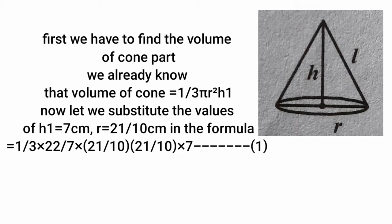First, we have to find the volume of the cone part. We know that volume of cone equals 1/3 π r² h1. Now let us substitute the values: h1 equals 7 cm, r equals 21/10 cm in the formula. That equals 1/3 × 22/7 × (21/10) × (21/10) × 7. Take it as equation 1.